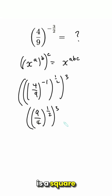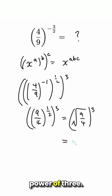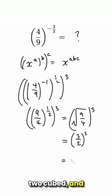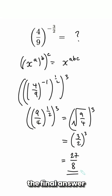The half power is a square root. So I need to take the square root of 9 over 4 and then raise it to the power of 3. That's the square root of 9 over the square root of 4, so that would be 3 over 2 cubed. And then that would be 3 cubed over 2 cubed, which gives 27 over 8 for the final answer.